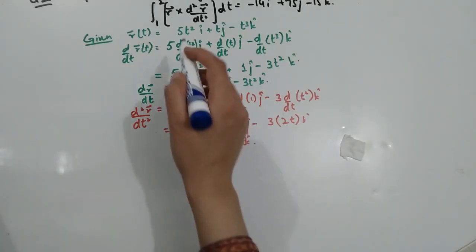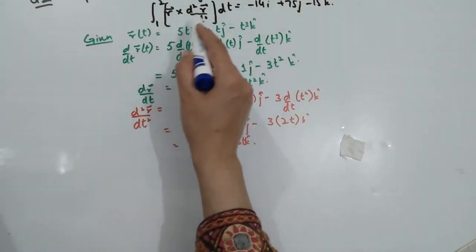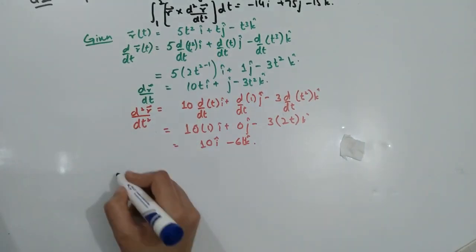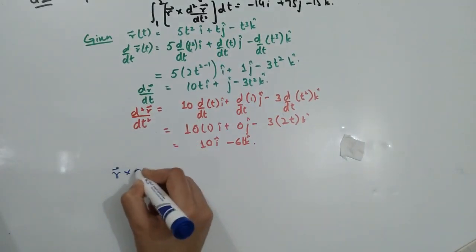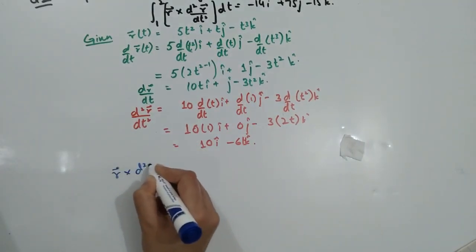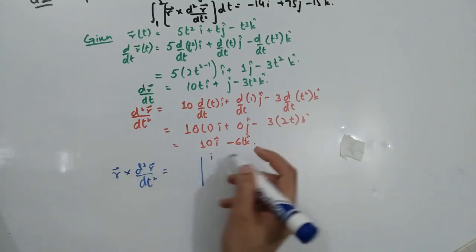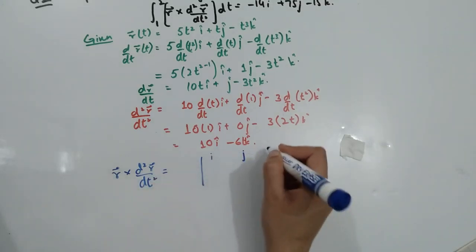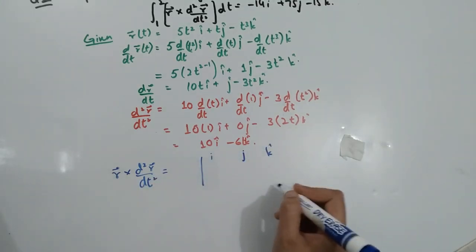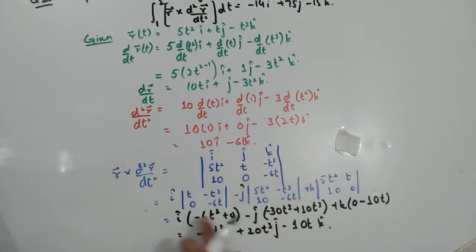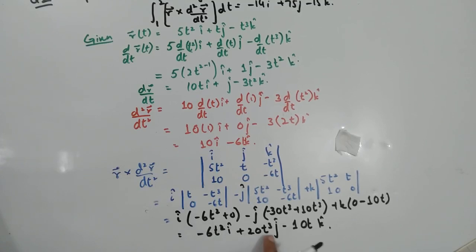According to the condition, we need the cross product of R and its second derivative. We use the determinant method. Placing the values of i, j, k and expanding the determinant, after expansion the result is: minus 6T squared i plus 20T cubed j component minus 10T k component.